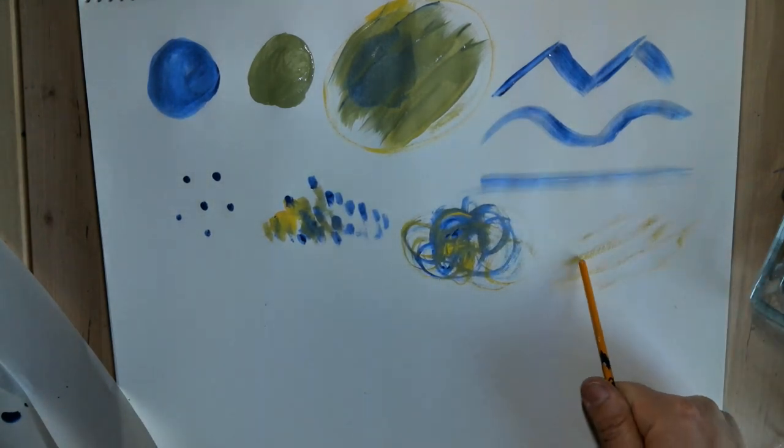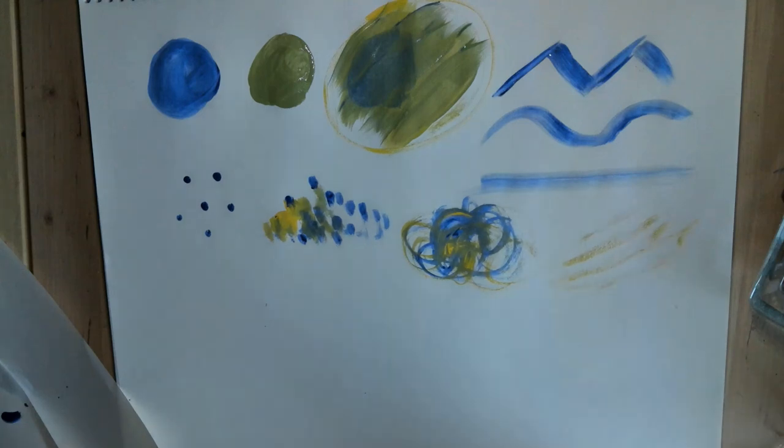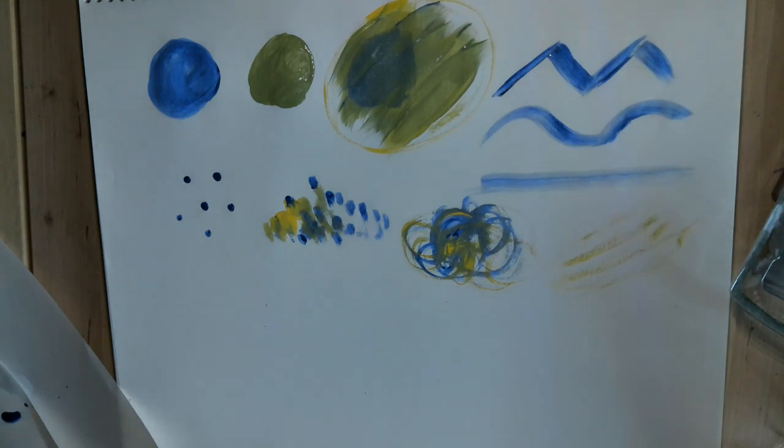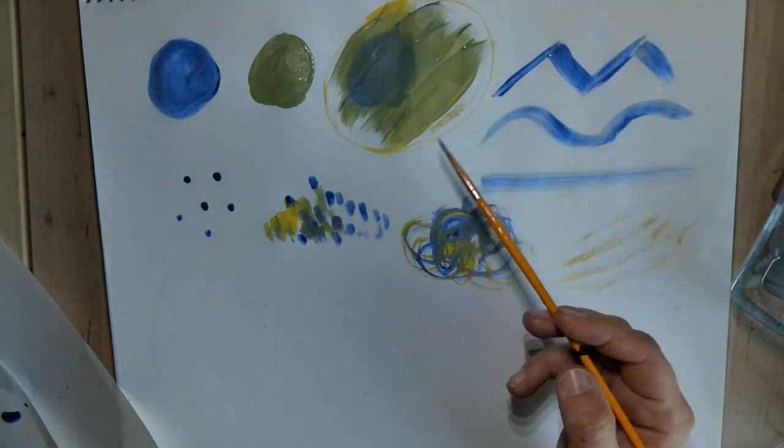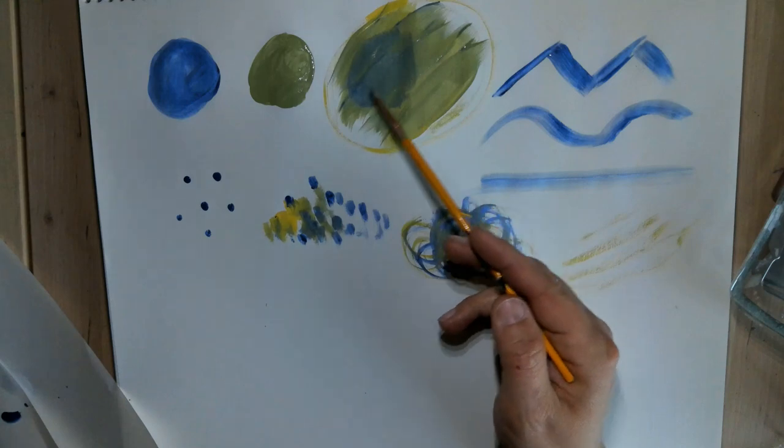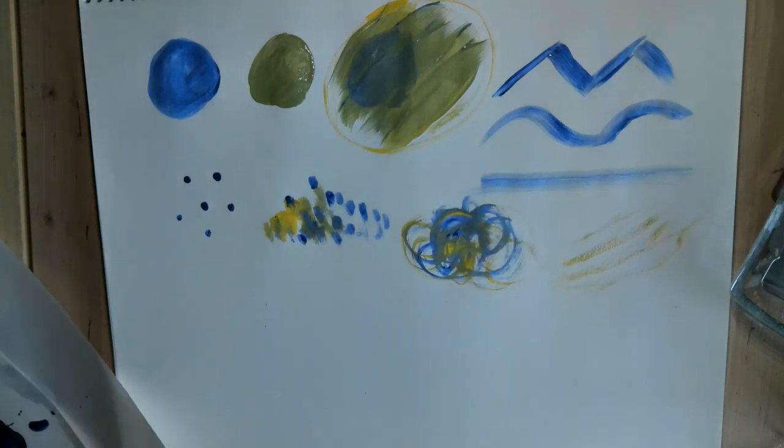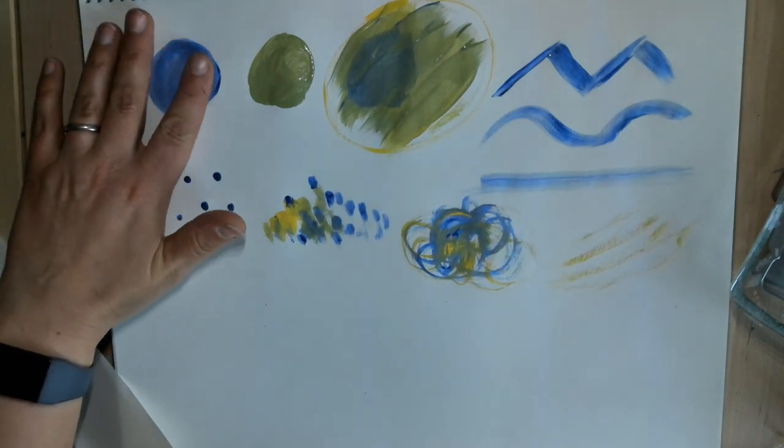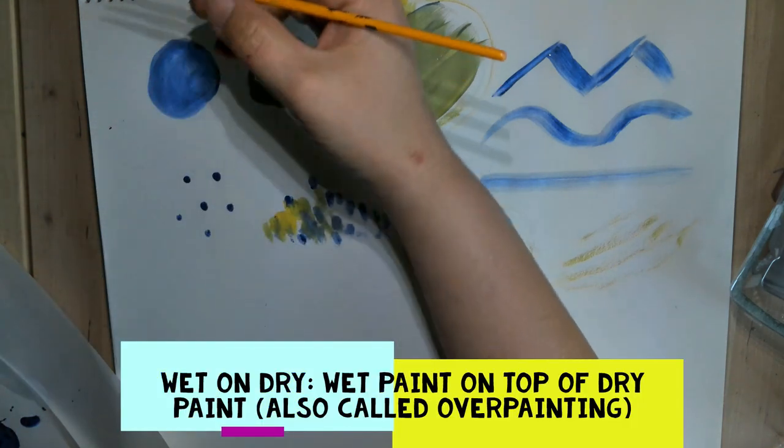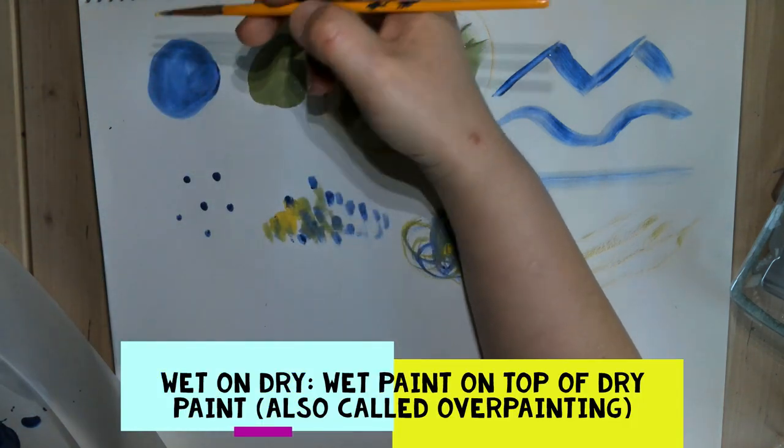Sometimes when you're using paint, you're going to use a wet on wet technique of blending where the paint is wet and then you're putting it on top and you want to mix the colors together. But sometimes you want the paint that you're putting down to be dry because you don't want the paint to blend. And this is called wet on dry, which just means I'm taking wet paint and I'm putting it on top of a dry surface.